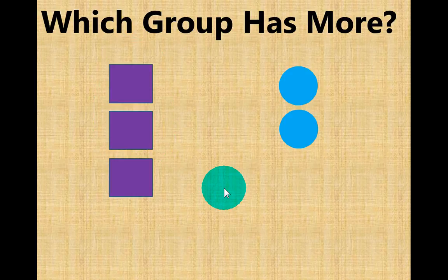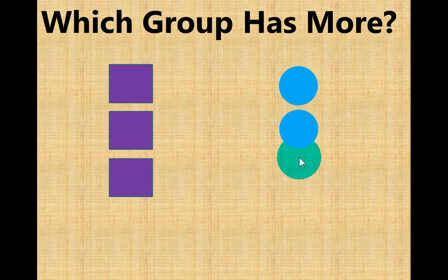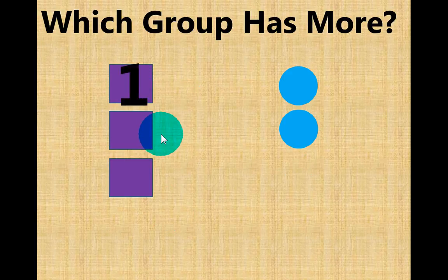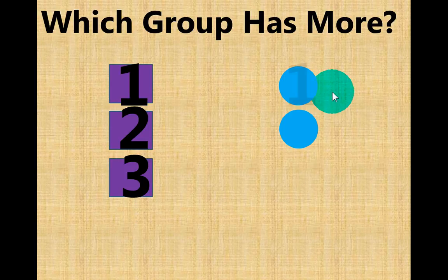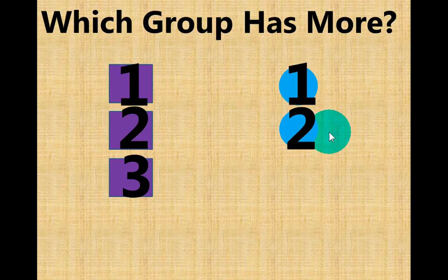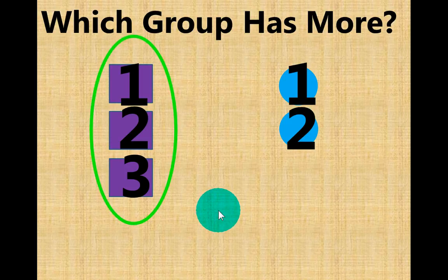Ready for more practice? Which group has more — the purple squares or the blue circles? Let's count. One, two, three — we have three purple squares. One, two — we have two blue circles. Which group has more? That's right, the three purple squares.